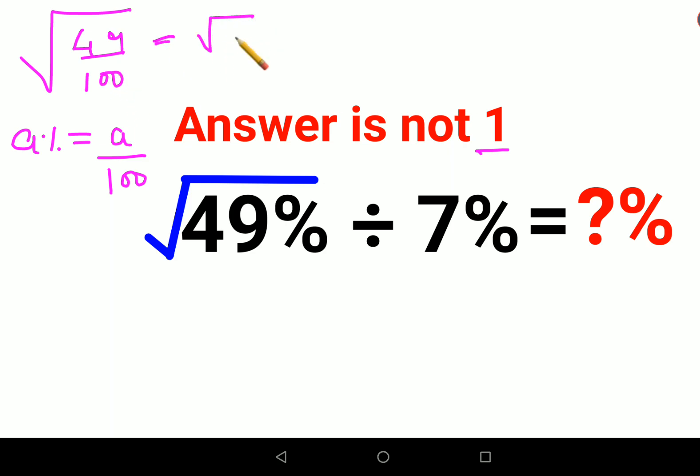This eventually we can split the root with the numerator and the denominator. Correct? So this becomes 7 upon 10.